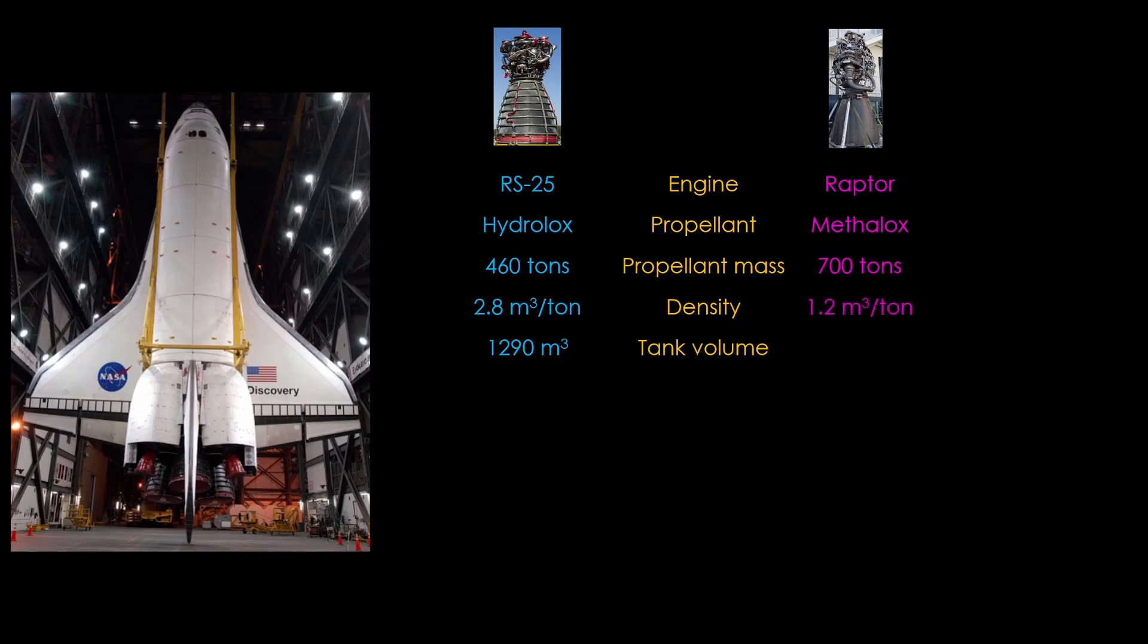the liquid methane is much denser than the liquid hydrogen, so it only takes 1.2 cubic meters of tank to hold a ton of propellant, and a total of 840 cubic meters to hold 700 tons.